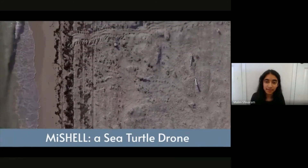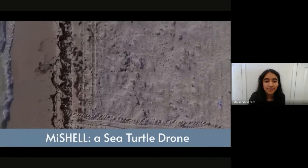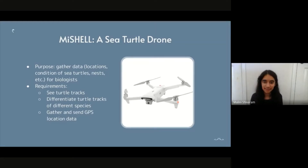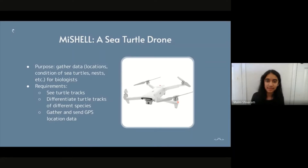There are different turtle tracks that we want to detect. The project I'm working on is MiSHELL, a drone intended to gather valuable data about sea turtles to be sent to biologists. We do this using artificial intelligence — namely object detection with turtle tracks. We'd like to gather locations of turtle tracks and turtle nests, their conditions, and more. I'm not working on the drone hardware, so I focus on the AI aspect. We want the drone to see and locate turtle tracks, and also tell which species of turtle made those tracks, since different types of turtles make different tracks that can be hard to tell apart.